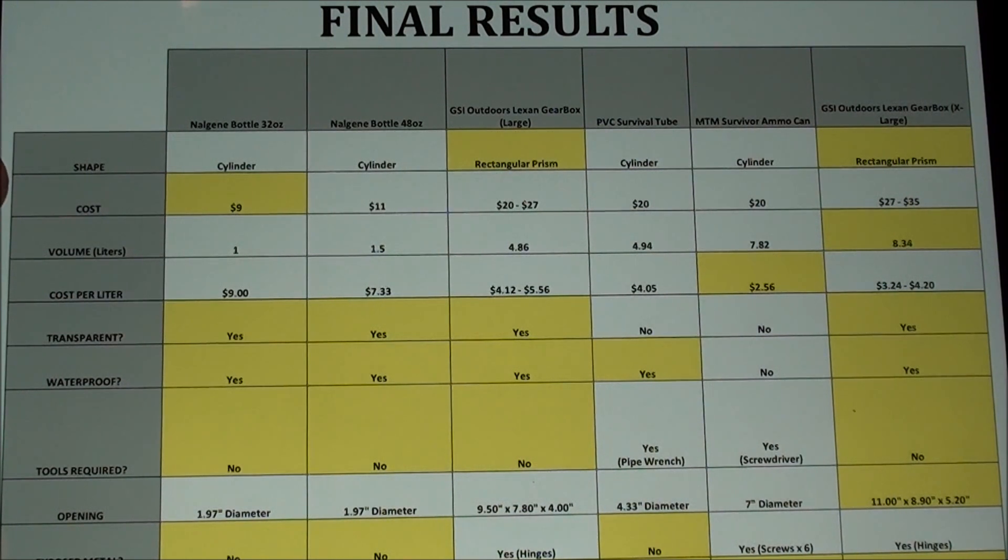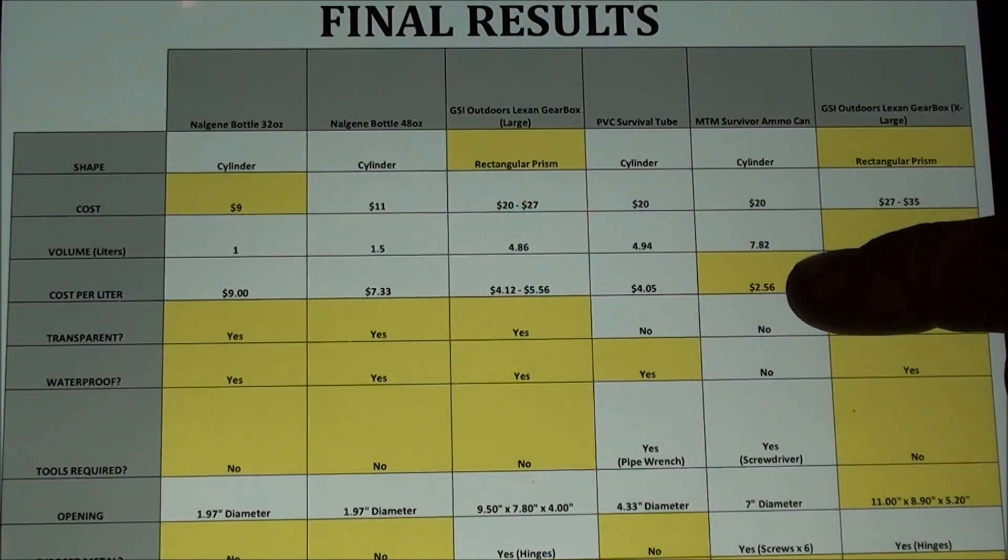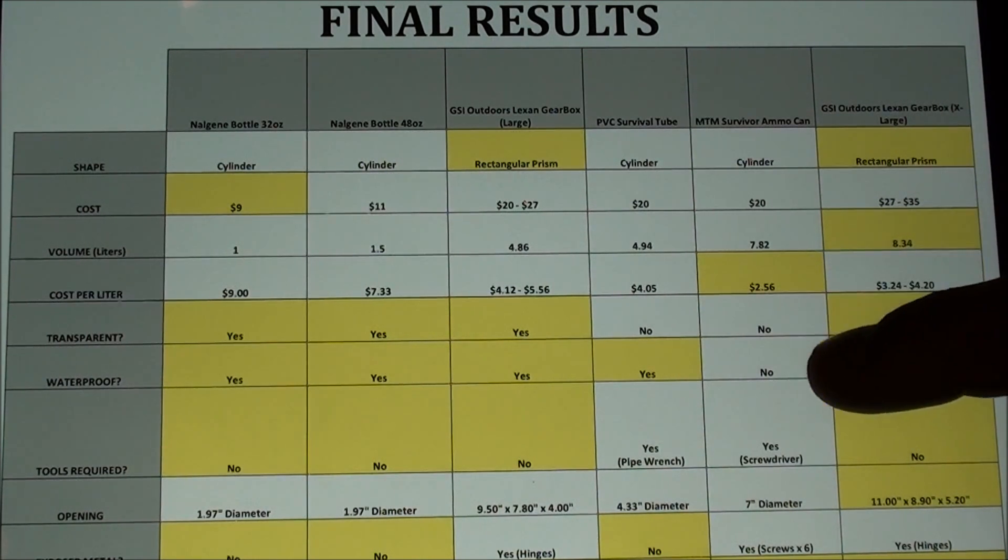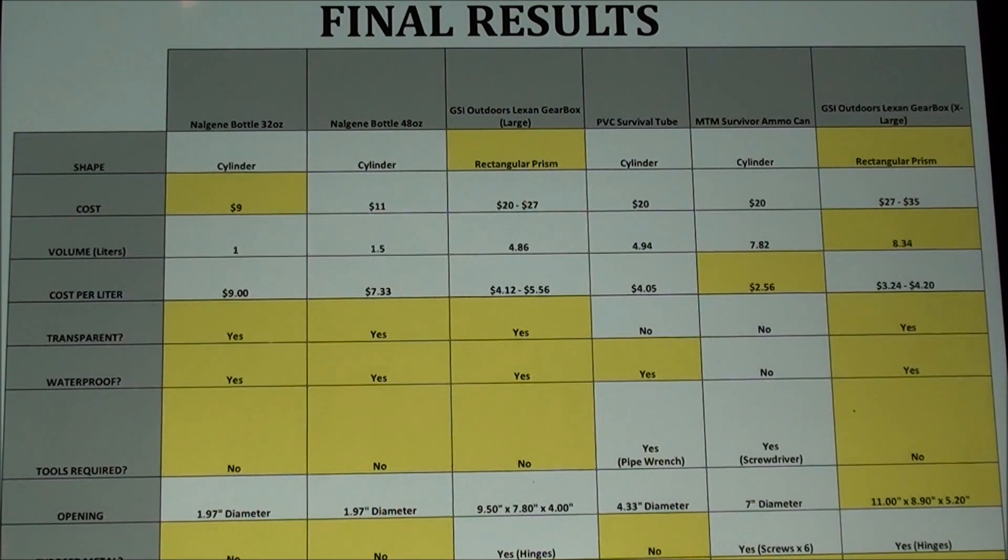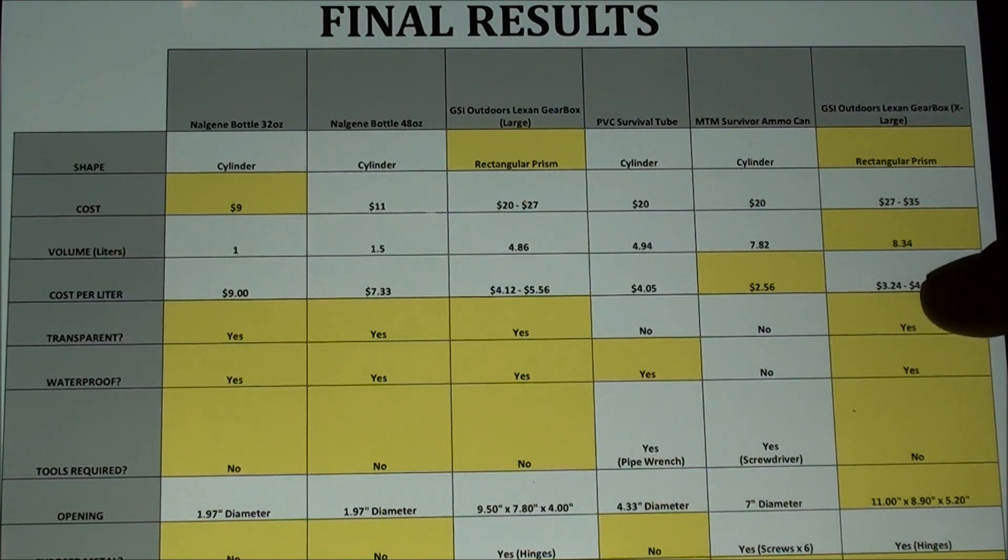With regard to volume, the one where you have the most volume is the GSI Outdoors Lexan gearbox extra large at 8.34 liters. So the most important figure then would probably be the cost per liter, so the most bang for your buck. So the most bang for your buck that you're going to get is with the MTM survivor ammo can at $2.56 a liter. Followed next by the GSI Outdoors Lexan gearbox extra large at as cheap as $3.24 per liter.